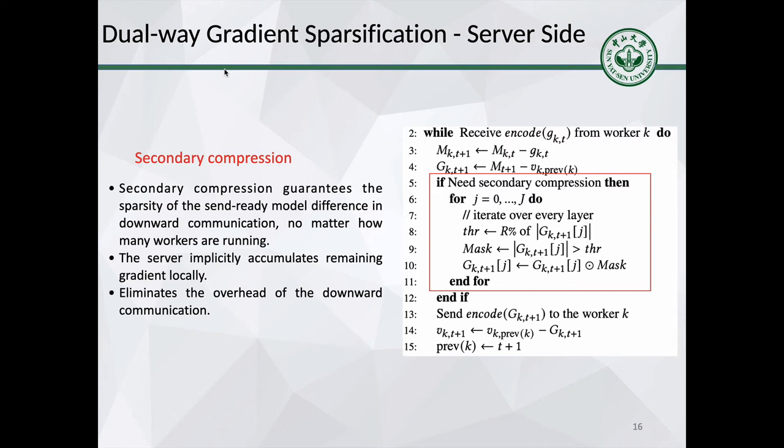At line 5 of the algorithm, there is a switch for secondary compression. If you are under small-scale settings, the server doesn't need this, because accumulation of several sparse updates is highly sparse too. However, if you are under circumstances like very limited network resources or very large number of workers, secondary compression can be included to further reduce downward communication. Secondary compression guarantees the compression ratio of the model difference, and the compression ratio can be adjusted according to the bandwidth.